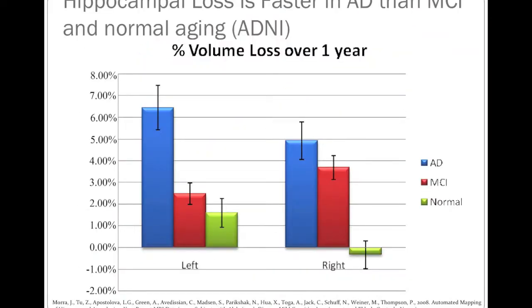Moving on, which markers of brain tissue loss are useful in a drug trial? One major focus has been quantification of the rate of tissue loss in the hippocampus — a fairly small structure deep in the temporal lobes that can be measured automatically. Comparing rates of hippocampal tissue loss between Alzheimer's patients, people with MCI, and healthy elderly people reveals big differences. Between five and six percent of hippocampal tissue is lost per year on average in Alzheimer's disease, whereas MCI and healthy groups have much lower rates. These are useful metrics of decline that correlate with symptoms of the disease.